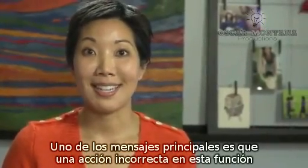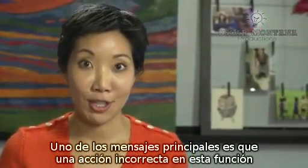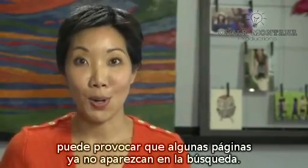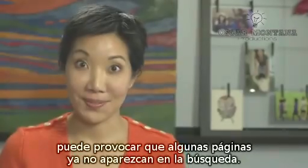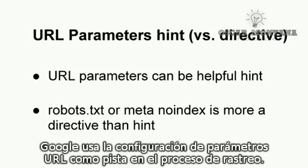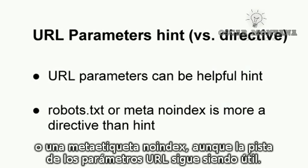One of the main takeaways is that improper actions on the URL parameters feature can result in pages no longer appearing in search. Again, it's an advanced feature. The settings in URL parameters are used by Google as a helpful hint in our crawling process. For stronger directives, you'll want to use things like a robots.txt disallow or a meta no-index, but using the URL parameters hint is still very helpful.